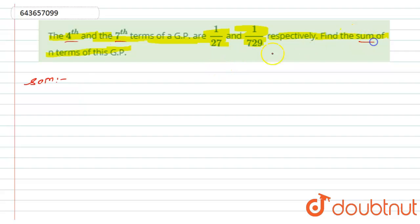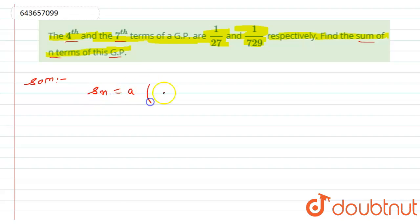As we know, the formula for calculating the sum of a GP is: Sn = a(r^n - 1) / (r - 1). For that, I need the value of a and the value of r.